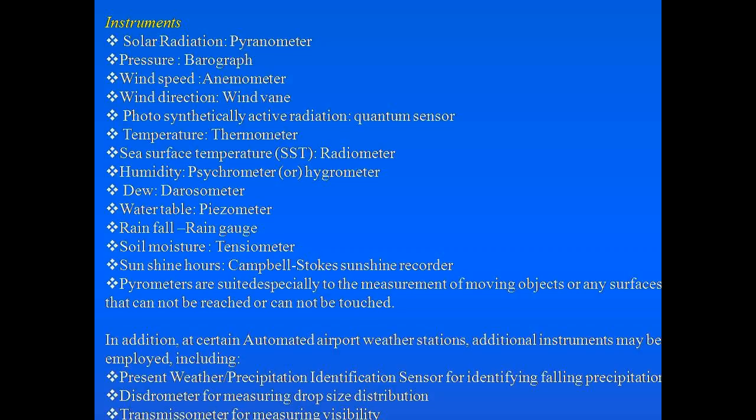For measuring solar radiation we use a pyranometer. For measuring pressure, barograph. For wind speed, anemometer. For wind direction, wind vane. Photosynthetically active radiation uses a quantum sensor. Temperature is measured by thermometer, and sea surface temperature uses a radiometer. Humidity is measured by psychrometer or hygrometer, groundwater table by piezometer, rainfall by rain gauge, soil moisture by tensiometer, and sunshine hours by the Campbell-Stokes sunshine recorder.